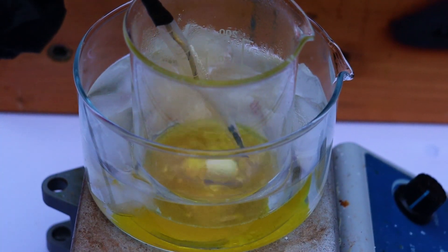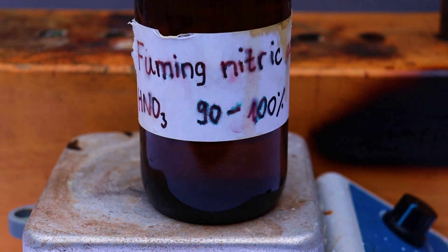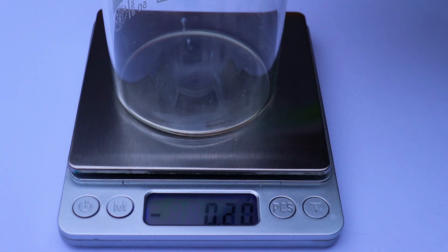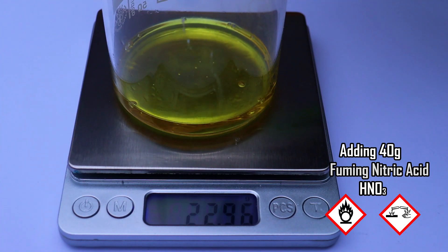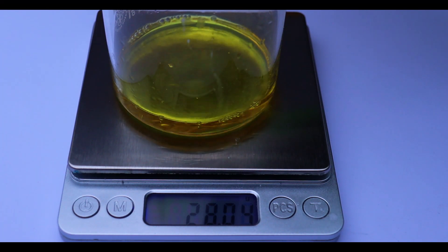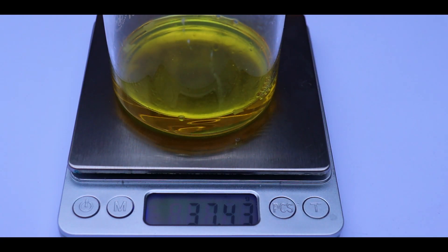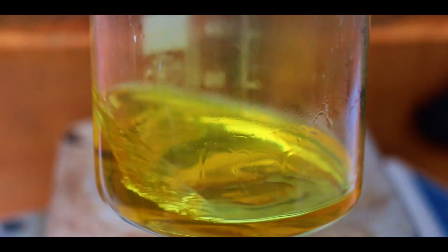So let's start with the synthesis of RDX. Firstly, we need to prepare 40 grams of fuming nitric acid. In some procedures, it says that the nitric acid must be free of nitrogen oxides, so it calls for use of white fuming nitric acid. But this here is just ordinary red fuming nitric acid with some nitrogen oxides dissolved in it. As I later found out, this does not present any problem, and the acid actually turns colorless during the synthesis. So next we need to add this beaker with acid into an ice bath.